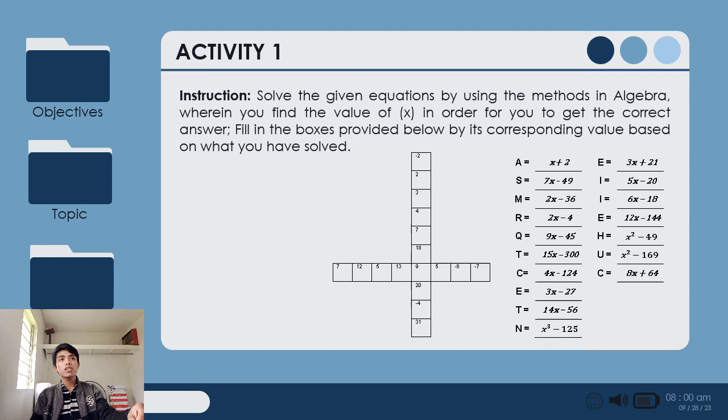In the instruction, solve the given equations by using the methods in algebra where you find the value of x in order for you to get the correct answer. Fill in the boxes provided below by its corresponding value based on what you have solved. So in this kind of activity, let's have our groupings. Count off from 1 to 5. Go to your respective groups.